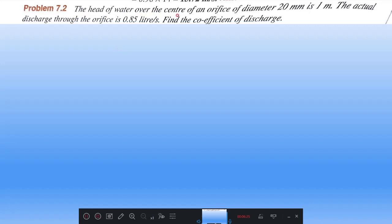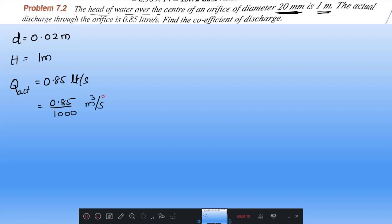Problem 7.2: The head of water over the center of the orifice of diameter 20 mm is 1 meter. Therefore, need to read this very carefully. The diameter of the orifice is 0.02 meter, and height of the water is 1 meter. The actual discharge through the orifice, Q actual, is 0.85 liters per second. Liter to meter cube, divide by 1000. Therefore 0.85 divided by 1000 meter cube per second. They are asking us to calculate Cd.